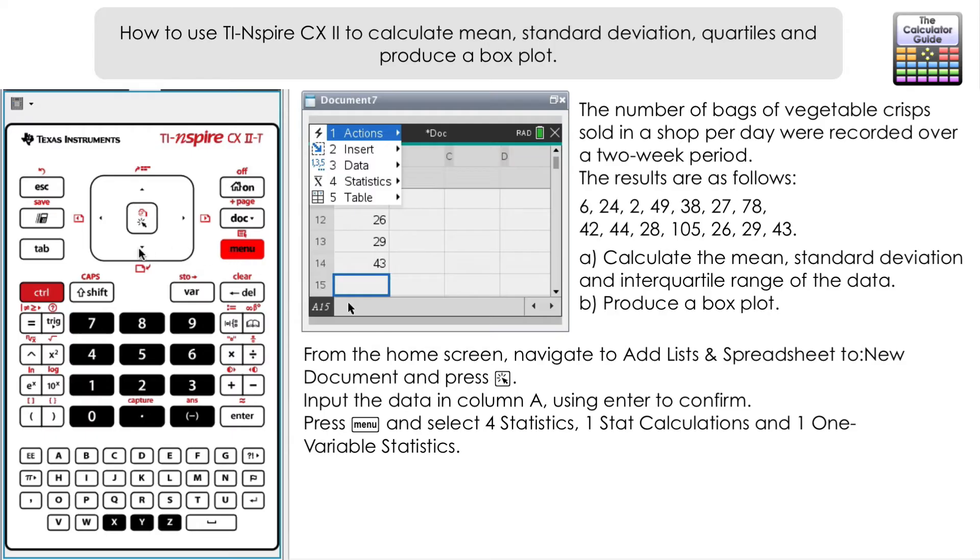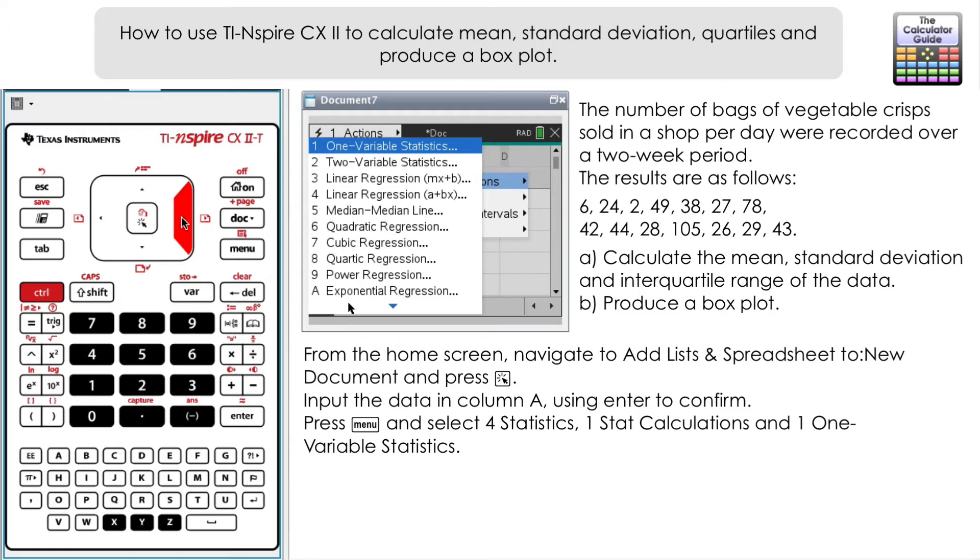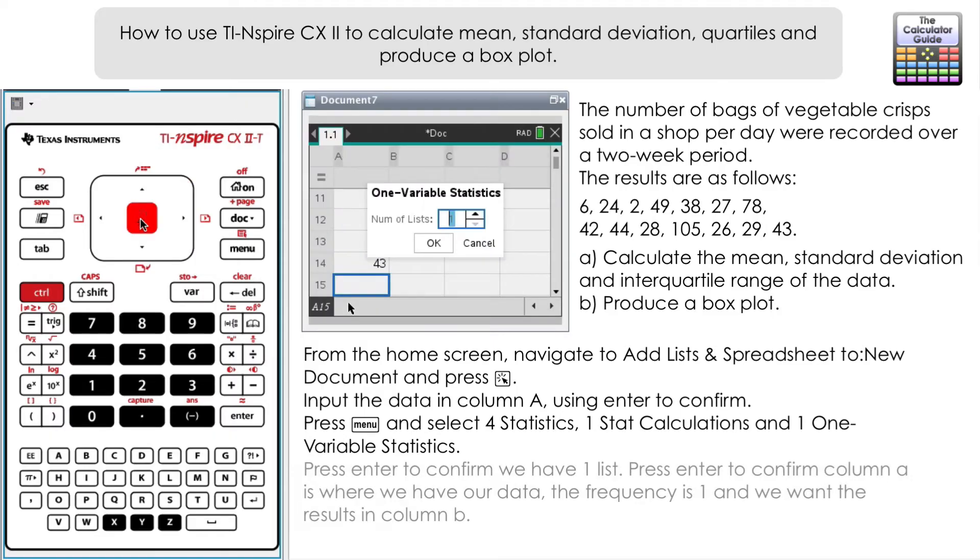Press right and we want Statistical Calculations. Then we've got different relationships between the variables. We've just got one variable, the number of crisps sold per day, so we're just going to choose One-Variable and press enter.